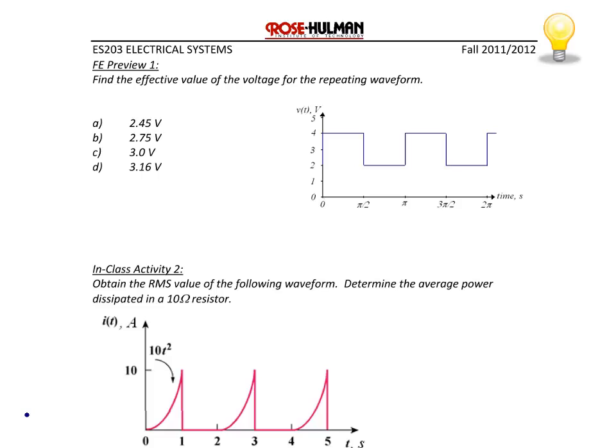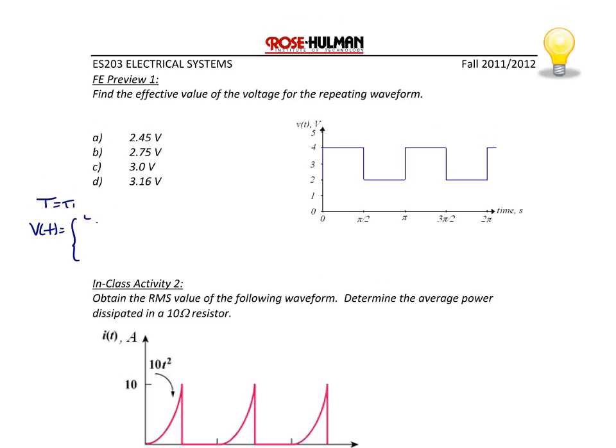So now let's try an example. First let's review finding the RMS value for the following repeating waveform. The first thing we should notice is that it has a period of π. And we should also notice that we have a piecewise linear function, v of t, because it has a value of 4 between 0 and π over 2, and 2 between π over 2 and π.